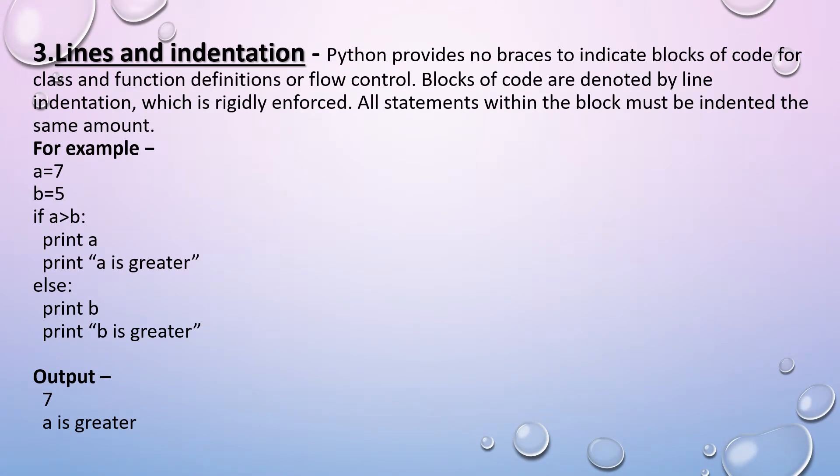Now the third one is lines and indentation. Python provides no braces to indicate blocks of code for class and function definitions or flow control. Blocks of code are denoted by line indentation, which is rigidly imposed. All statements within the block must be indented the same amount.